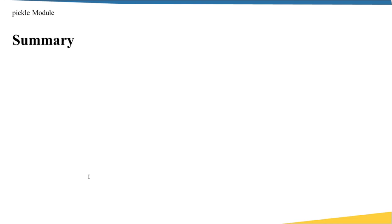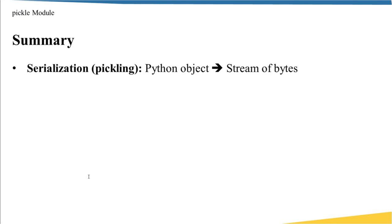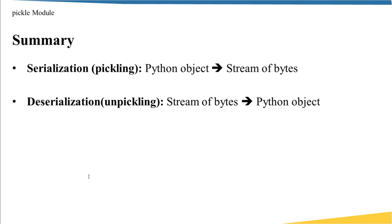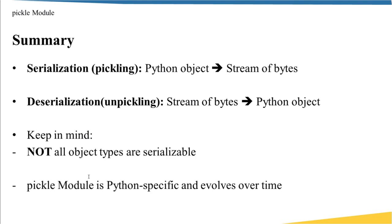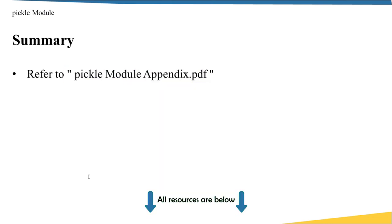To summarize: serialization is converting a Python object into a stream of bytes, called pickling in the context of the pickle module. The reverse process is deserialization or un-pickling. Keep in mind that not all object types are serializable, pickle is Python-specific and evolves over time, so data pickled with Python must be un-pickled with Python, and be careful with version differences as newer pickle data may not be restorable by older versions.